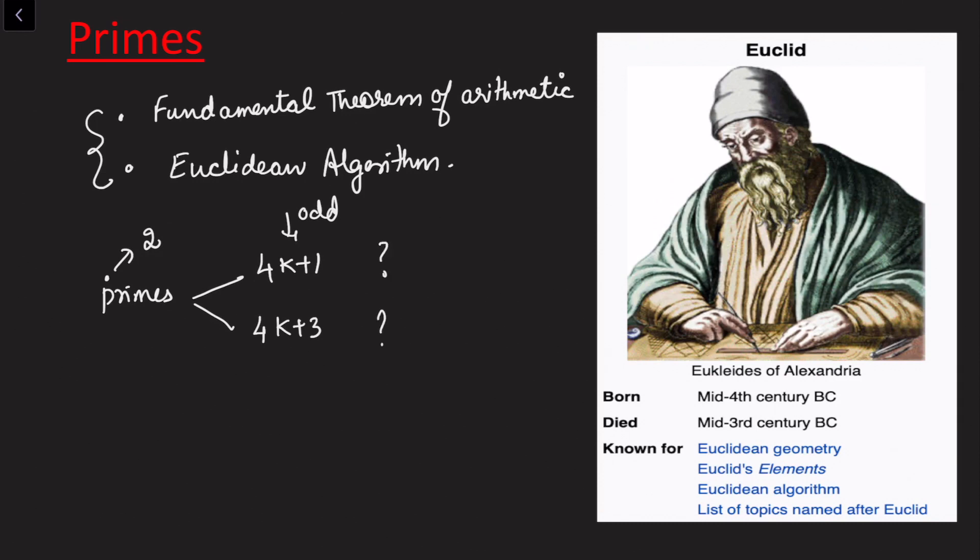We might want to know: are the classes of 4k plus 1 primes equal to 4k plus 3? This allows us to investigate properties based on these prime numbers. Noticing most of the proofs on prime numbers are due to contradictions.